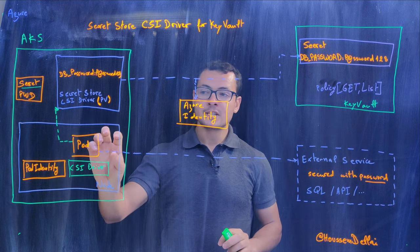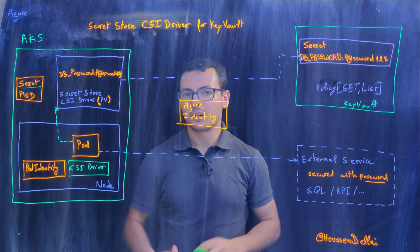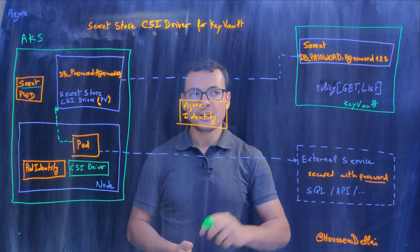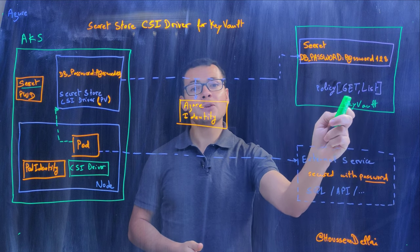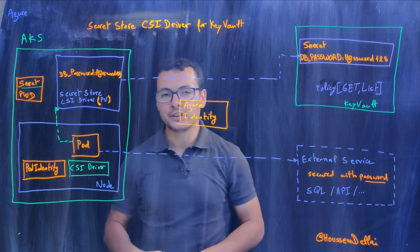But now, the problem is: how can I access this password from my pod running in Kubernetes? Do I need to get the password for my Key Vault? That's not a good solution, because then I would use that secret object in Kubernetes.